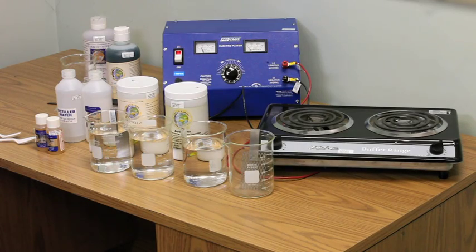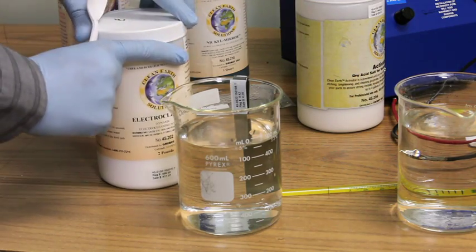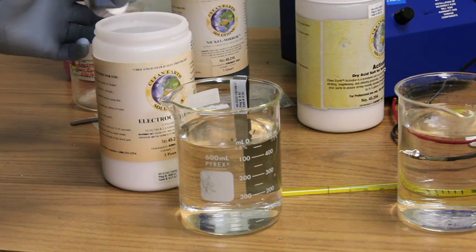To begin the actual plating process you need to mix the chemical baths. These are the same baths used in gold plating. Place two teaspoons of electro cleaner in a beaker three-quarters of the way filled with distilled water.